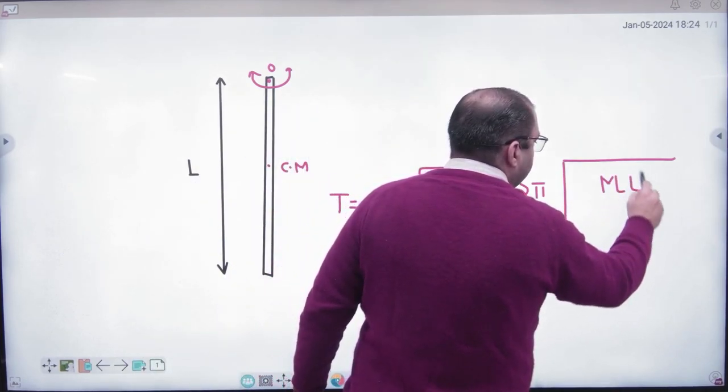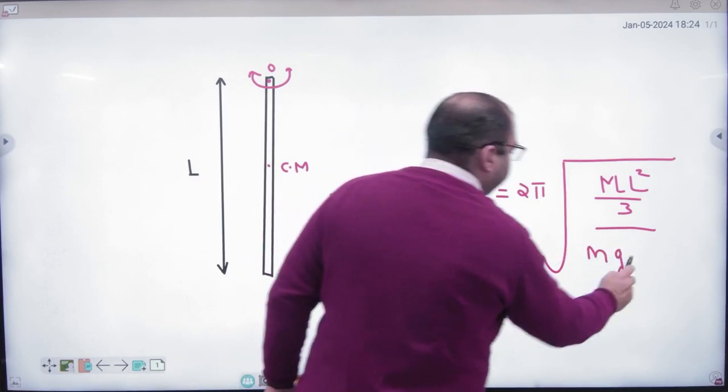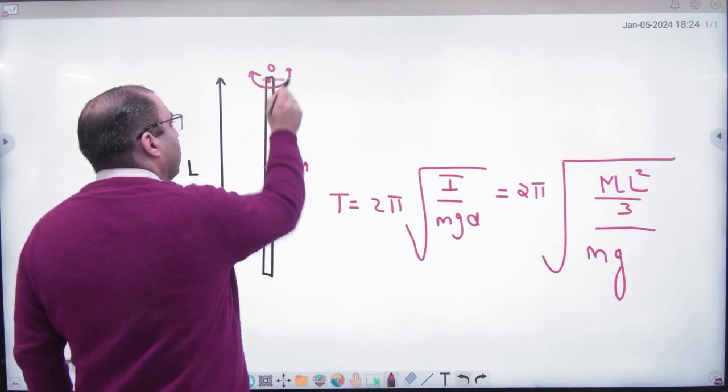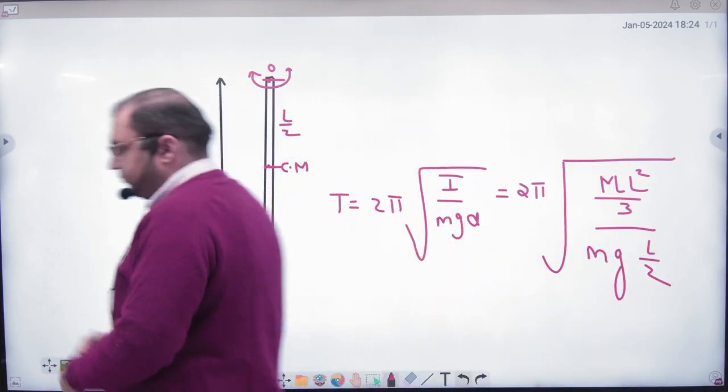Mg. So here, I equals mL squared by 3, mg, and center of mass distance is L by 2. Answer.